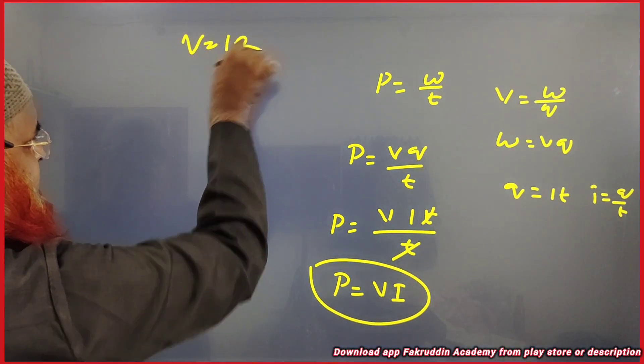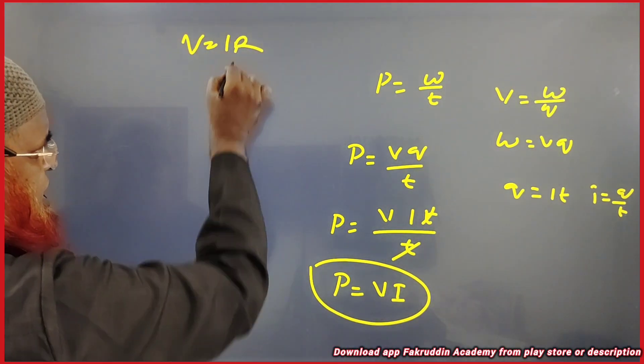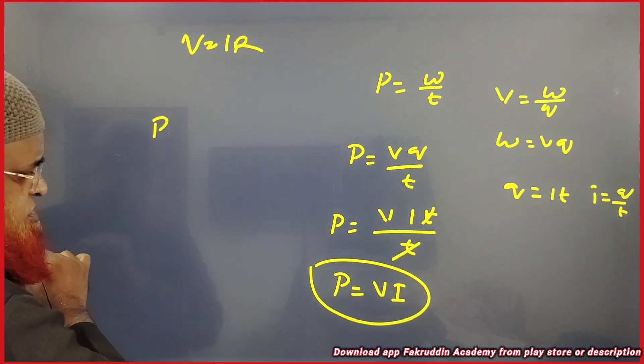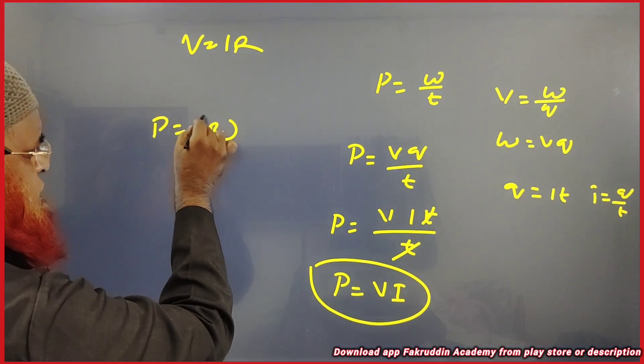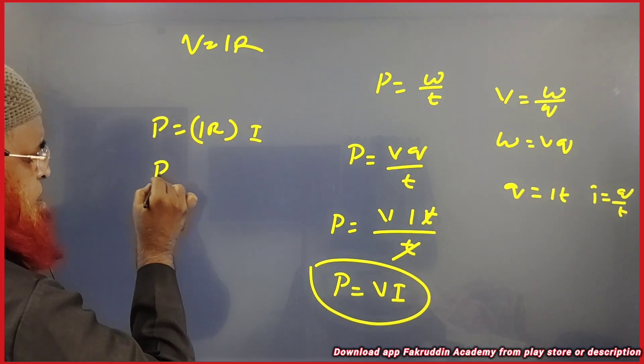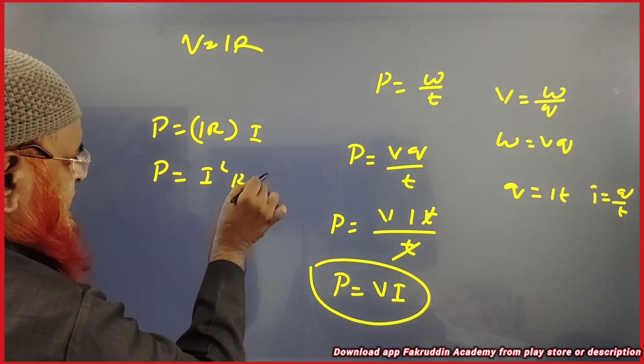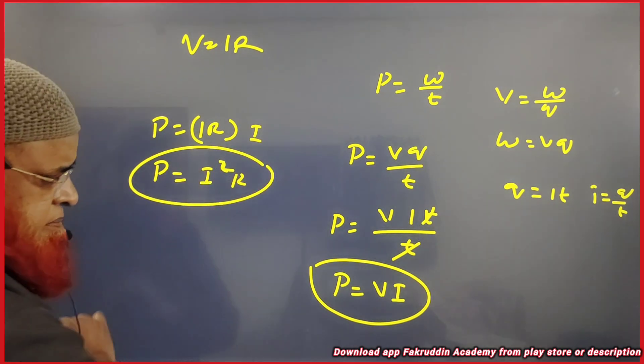And you also know V is equal to IR. You will substitute here. You will be getting power is equal to I into R into I. So therefore power is equal to I square R. This is one formula you have to remember.